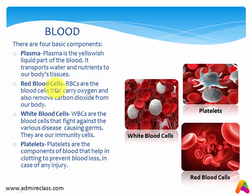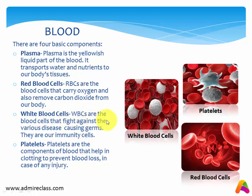The next one is red blood cells, or RBCs. RBCs are the blood cells that carry oxygen and also remove carbon dioxide from our body. The next one is white blood cells, or WBCs. These are the blood cells that fight against various disease-causing germs. They are our immunity cells, giving us the power to fight against various diseases.